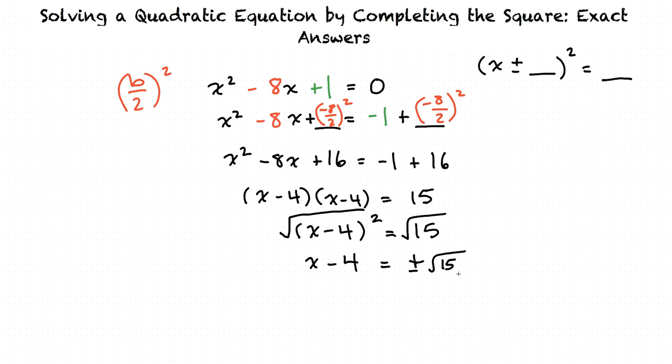Remember to put the plus or minus sign there in front of the square root, because negative square root of 15 squared is 15, and positive square root of 15 squared is also 15. So they both need to be included in our equation. This will give us two answers for x.